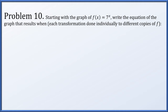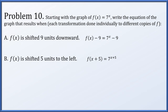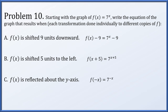Problem 10 starts with f(x) = 7 to the x and applies various individual transformations. Shifting f down by 9 units gives 7 to the x minus 9. Shifting f left by 5 units replaces x with x plus 5, giving 7 to the (x+5), which equals 7 to the 5th times 7 to the x — a vertical stretch. For exponential functions, horizontal translations and vertical stretches are equivalent. Reflecting f across the y-axis replaces x with minus x, giving 7 to the minus x.